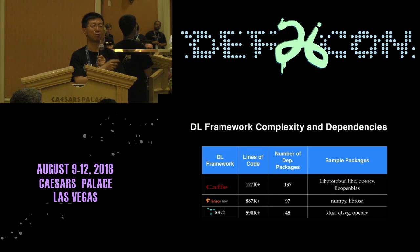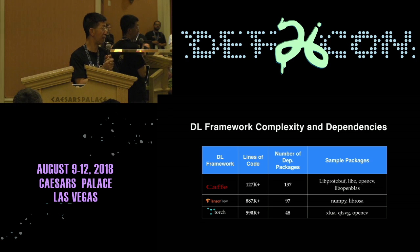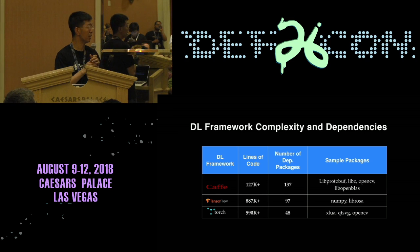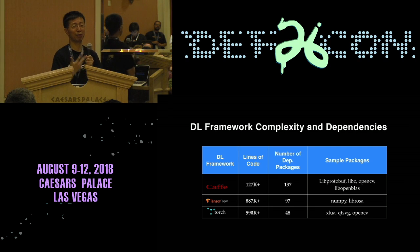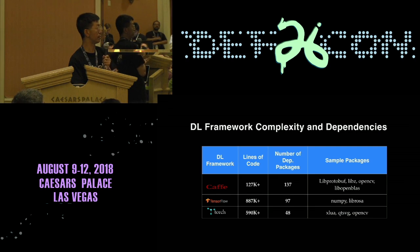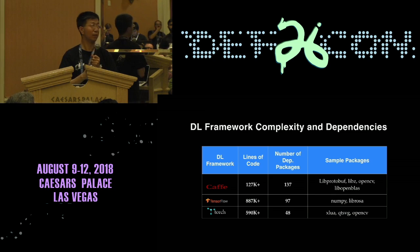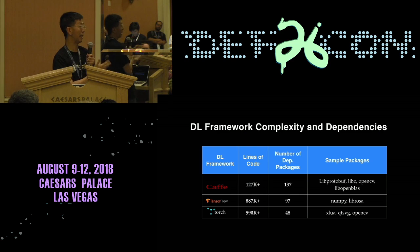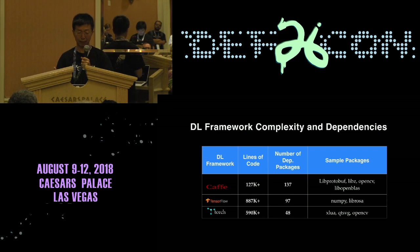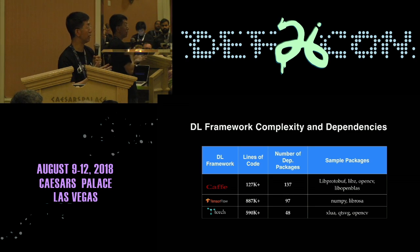I did some line-of-code counting in 2017 for Caffe, TensorFlow, and Torch. It's not perfectly scientific since some are in C and some in Python, but roughly there are a few hundred thousand lines of code in each framework. On top of that, they all depend on a bunch of additional libraries — for example Caffe depends on libz, OpenCV, libprotobuf, and many other common packages.